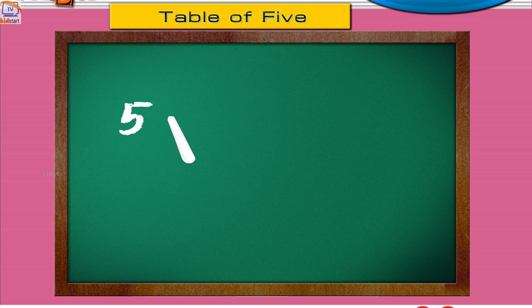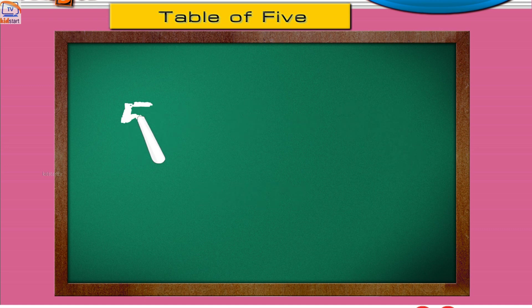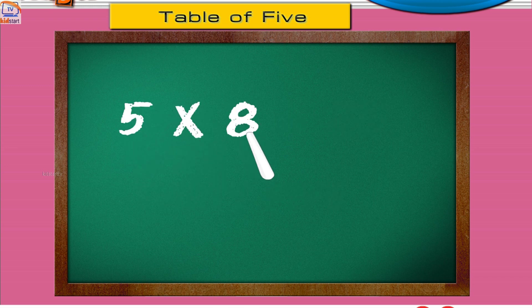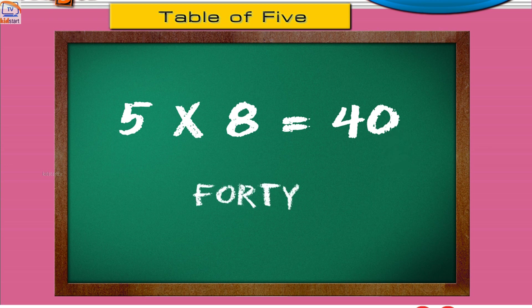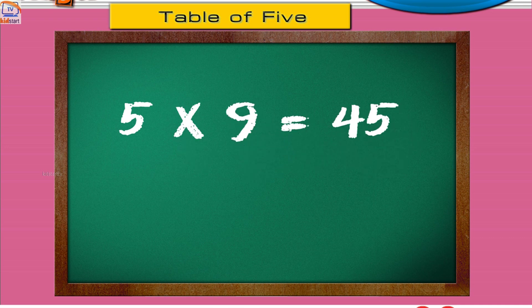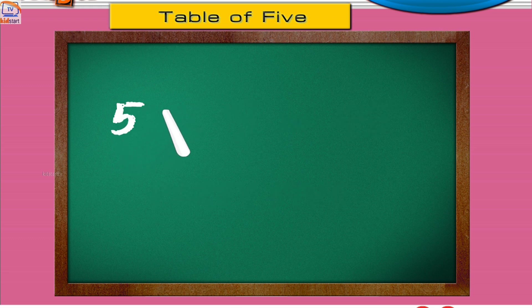Five sixes are thirty. Five sevens are thirty-five. Five eights are forty. Five nines are forty-five. Five tens are fifty.